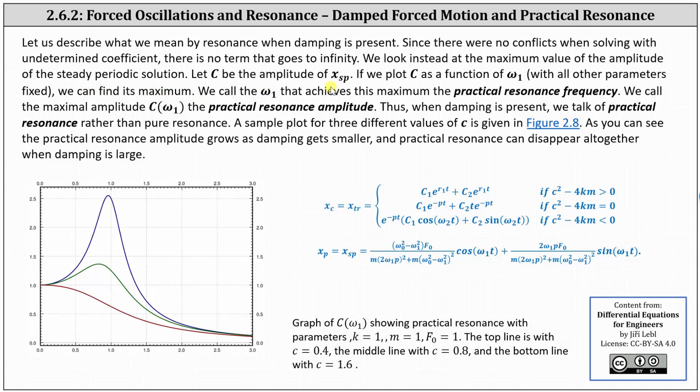We call the ω_1 that achieves this maximum the practical resonance frequency. We call the maximal amplitude C(ω_1) the practical resonance amplitude. Thus when damping is present, we talk of practical resonance rather than pure resonance.